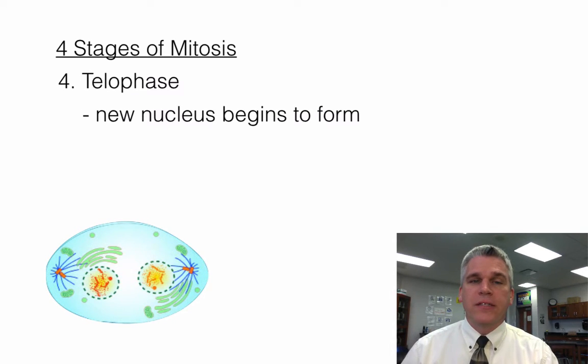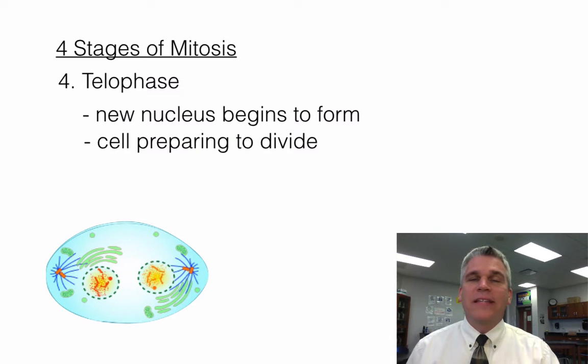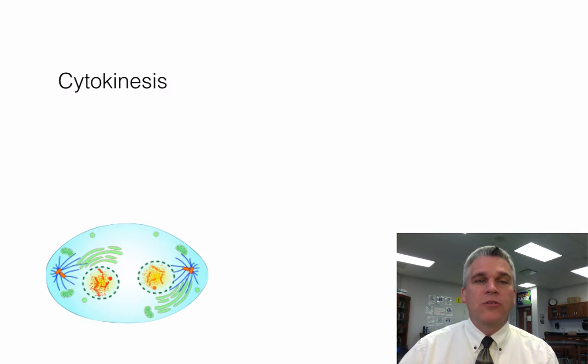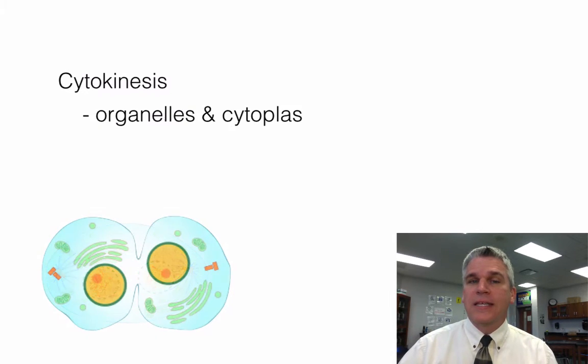Now we get into telophase. Here, a new nucleus begins to form. So you can see those dashed lines going around the chromosomes as the nucleus begins to form. The cell now is preparing to divide. So it's starting to elongate a little bit, and pretty soon it's going to divide into two new cells, which is what cytokinesis is.